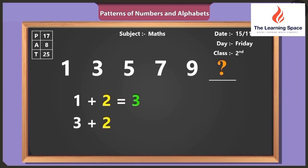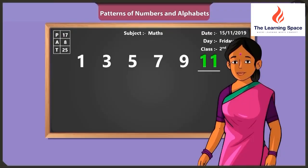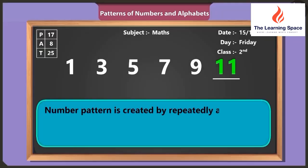Yes, two added to three gives five. Two added to five gives seven. Two added to seven gives nine. And two added to nine, result is eleven. Yes, therefore eleven comes after nine in this pattern. Well done. So children, number pattern is created by repeatedly adding a specific number to given numbers.